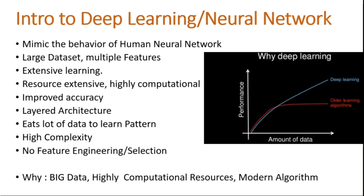The inspiration for deep learning comes from the way the human brain filters information. Deep learning is generally used when we have a large dataset — when the dataset is large, machine learning shallow techniques like linear regression and logistic regression cannot improve performance. In deep learning we can handle a large number of features, columns going up to 100, 200, and beyond. It provides improved accuracy, but it is highly resource-intensive, requires many iterations, has a layer architecture, eats a lot of data to learn patterns, and importantly, there is no need to perform feature engineering or feature selection.